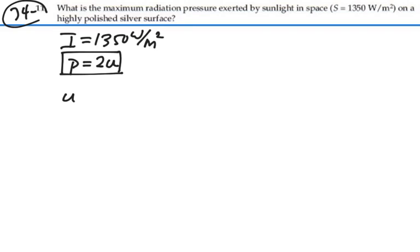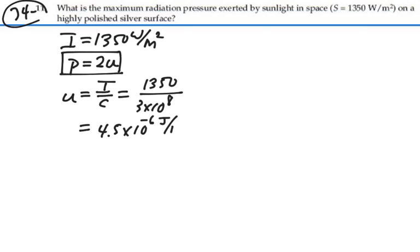And the energy density is equal to the intensity divided by the speed of light. So that's going to be 1350 divided by 3 times 10 to the 8th, and in the previous problem we found that to be 4.5 times 10 to the minus 6 joules per cubic meter.